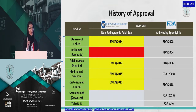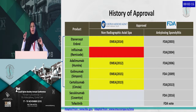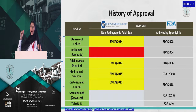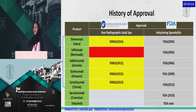Now, in non-radiographic SpA, the FDA — as well as the EMA — did not approve the use of this medication, except if you have active signs of inflammation on MRI. That's why we need to do an MRI of the SI joint specifically — not the pelvis, not the hip.